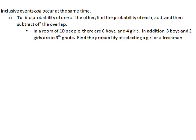Inclusive events can occur at the same time. To find the probability of one or the other, you have to find the probability of each individually, then add those two, and then subtract off whatever overlap there is, because whatever overlap exists is going to be counted in both. So in a room of ten people there are six boys and four girls.